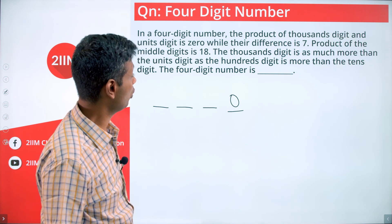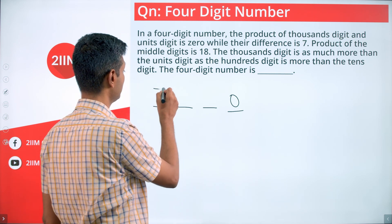And while their difference is seven. Brilliant. Thousands place, units place, difference of seven. This should be seven. We're dealing with a number that is seven dash dash zero.